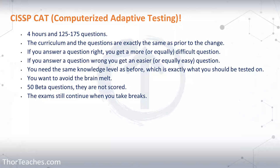In this lecture, we're going to look at the CISSP CAT exam. When you take your CISSP test on the CAT platform, you have four hours to answer between 125 and 175 questions.